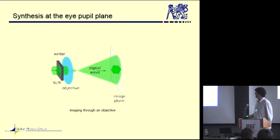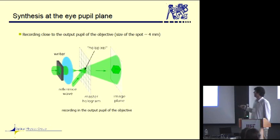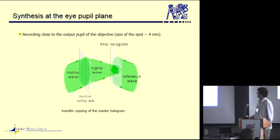We use this kind of projecting of the image from special light modulator through an objective to some distance plane. And we put the recording plate of the master hologram near to the output pupil of this objective. We bring in a reference wave and we record this pixel. In this way, we just shift the stuff and record all the plate. And again, develop, replay and record.